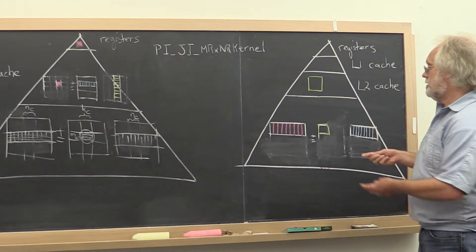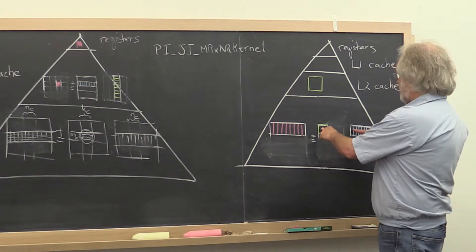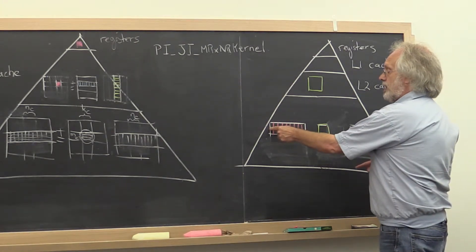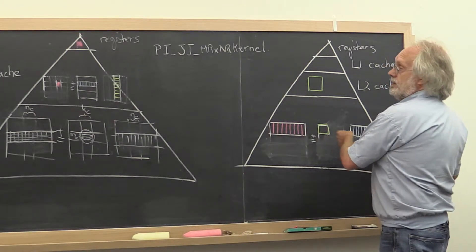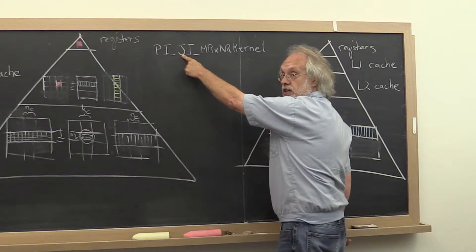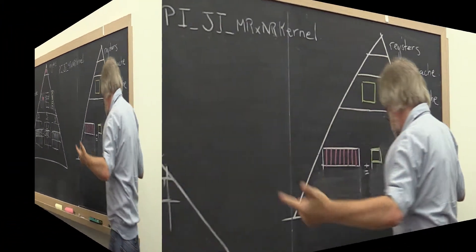And what we now need to do is the block of A times the micropanel of B to update the micropanel of C. And we loop through that. That is our loop indexed with J.